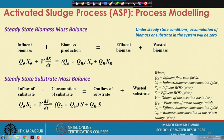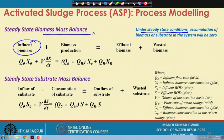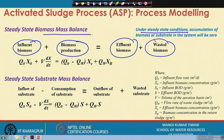We are considering mass balance under steady-state conditions. The accumulation of either biomass or substrate in the system is not taking place because it is a steady-state condition. Looking at the steady-state biomass mass balance, the influent biomass coming into the system plus biomass being produced would be equal to the biomass leaving with the effluent and biomass which is being wasted.